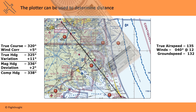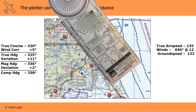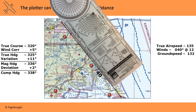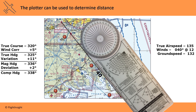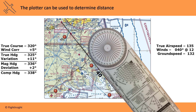We can use the plotter again to figure out the distance and later the time en route. Make sure you use the correct scale on the plotter. The sectional chart uses the scale of 1 to 500,000. You can also verify the correct scale by matching up the mile marks on the plotter with the hash marks of the lines of longitude — each one of those hash marks is 1 mile. This flight is 59 nautical miles.